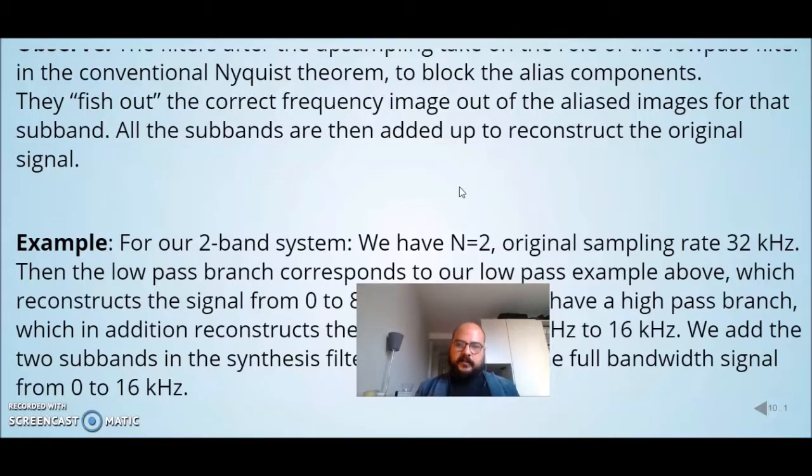the downsampling rate is equal to the number of subbands. If we have a sampling rate of 32 kHz, for example, we will have two branches.